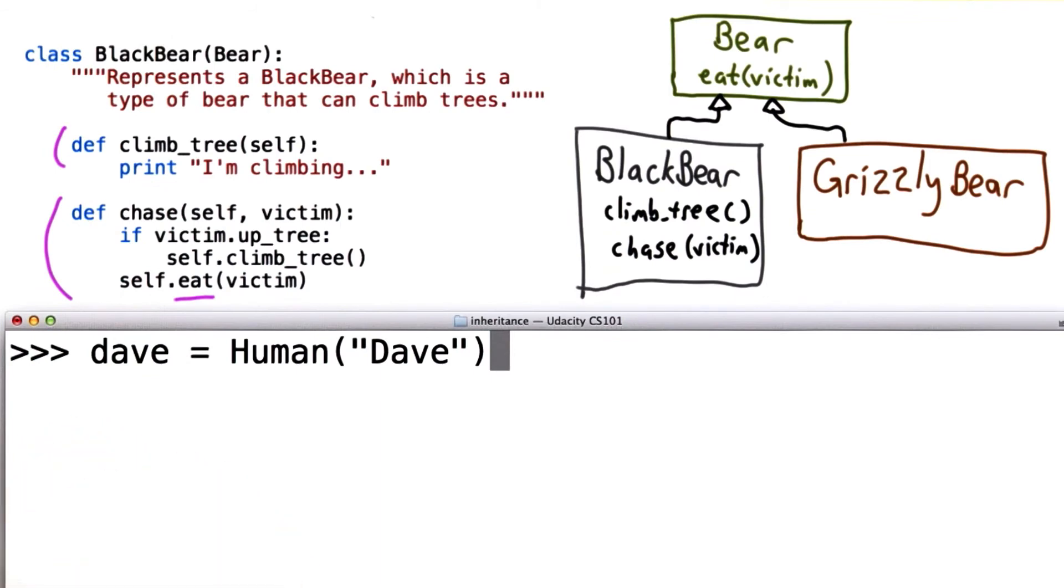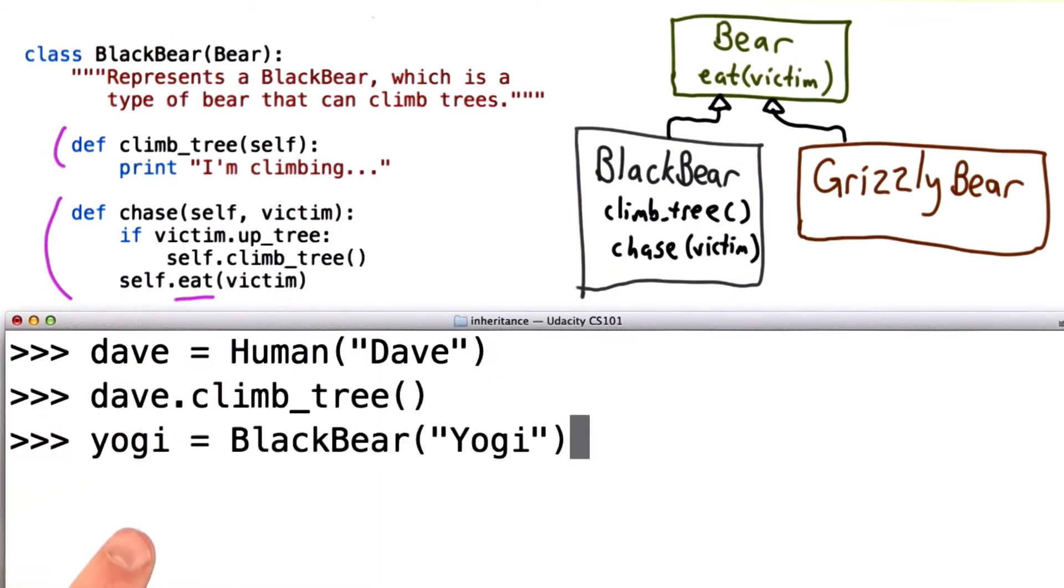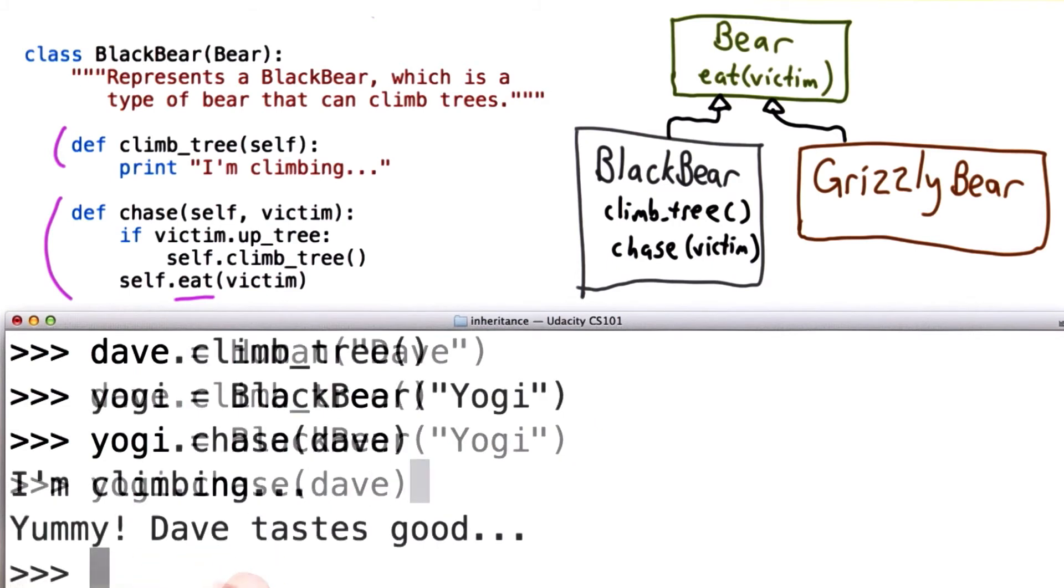Let's see how that works. We create our human victim Dave and put him up the tree. Then we create a BlackBear and have Yogi chase our victim. We see that Yogi can climb the tree and eat the victim.